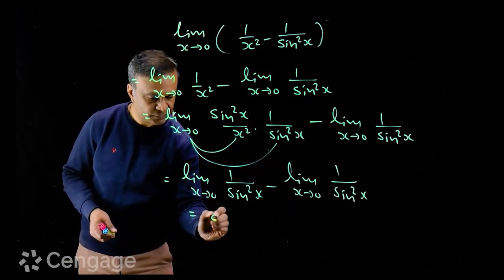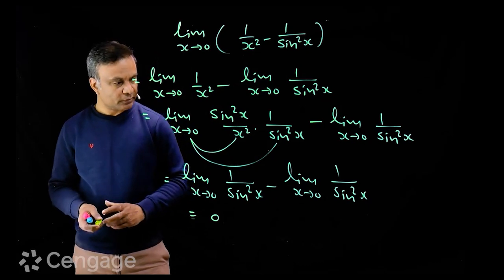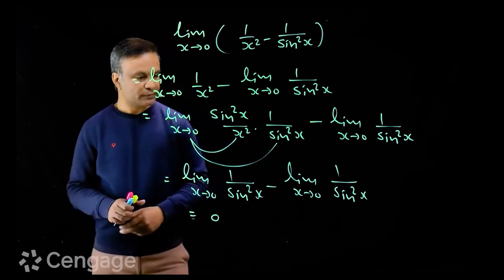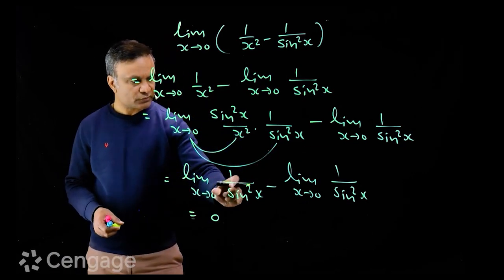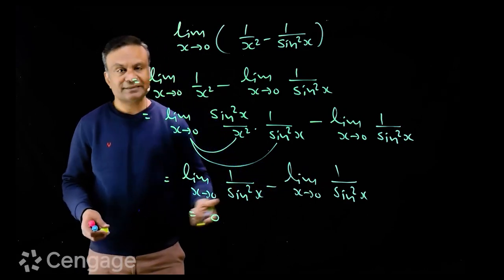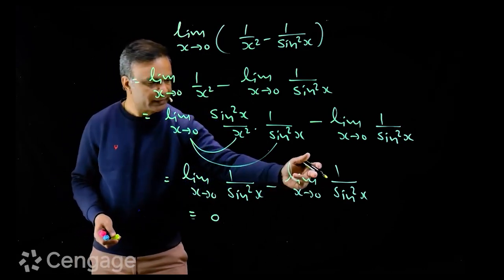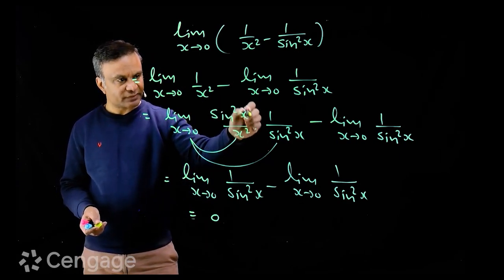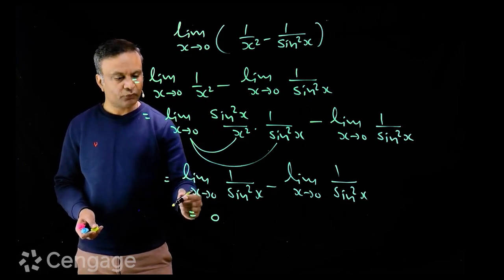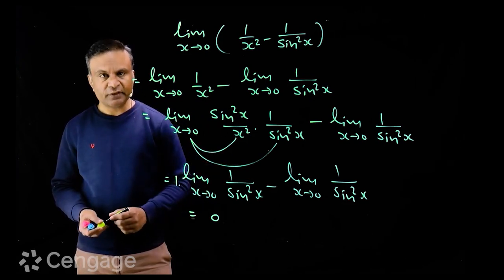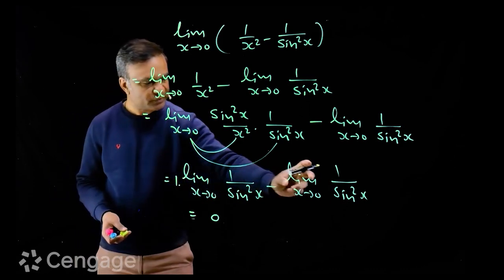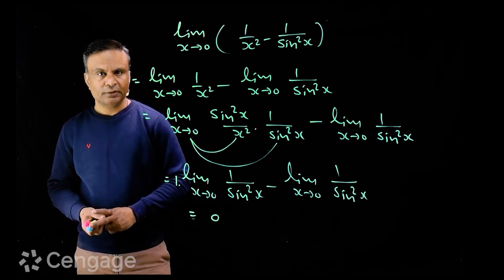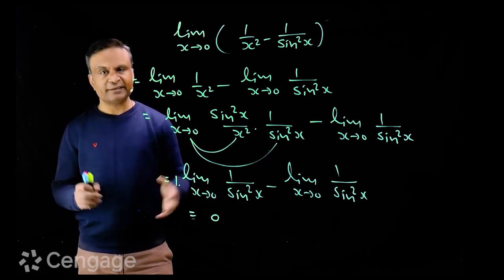These two terms cancel out, giving an answer of 0. But this is the wrong solution and the wrong approach. The reason is we cannot cancel these two limits, because when x tends to 0, sin²x/x² is not exactly 1 — it tends to 1. So these two limits are not exactly the same, and we can't cancel them out. This is wrong; let's do it in the right direction.